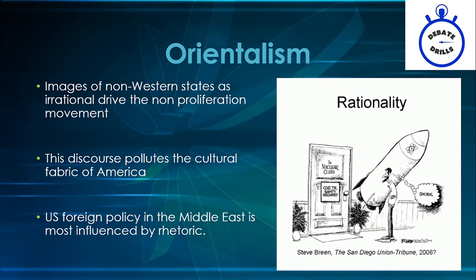The last thing we're going to talk about is the Orientalism critique. Orientalism is a theory developed by Edward Said, who argued that the way the Western world interacts with non-Western powers and generates influence isn't based on material subjugation, but on controlling the images and representations of people in the Orient. Sometimes this is done through aestheticizing or fetishization, but in the case of nuclear regimes, the narrative told about non-Western powers is that they're irrational and dangerous. These images drive non-proliferation movements, and link arguments should attempt to find where these images are in affirmatives.